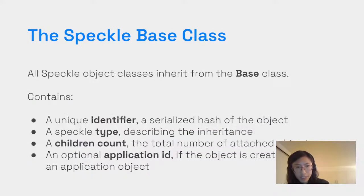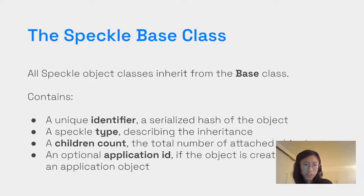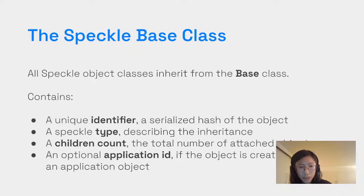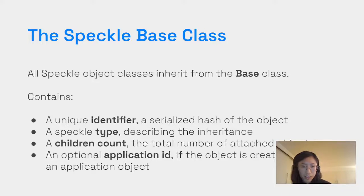All Speckle object classes inherit from the base class. The base class always contains a unique identifier — the serialized hash of the object — and all the object's properties: a Speckle type describing the inheritance structure, a children count tracking attached objects, and an optional application ID. For example, if you create a base class object from a Rhino connector, including the application ID of the Rhino object it was converted from helps for conversion purposes.